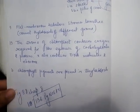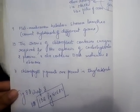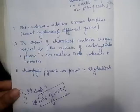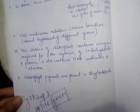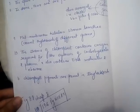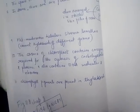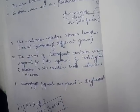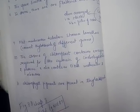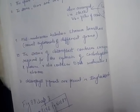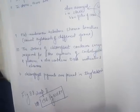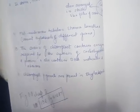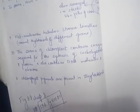The stroma also contains DNA molecules and ribosomes. Thylakoids contain chlorophyll pigments. The chlorophyll pigments are responsible for the green color — chlorophyll A, B, and C.